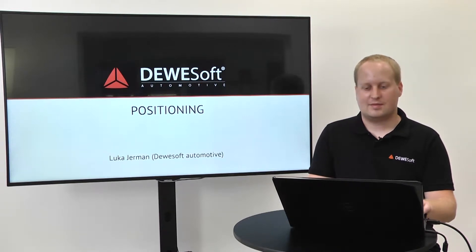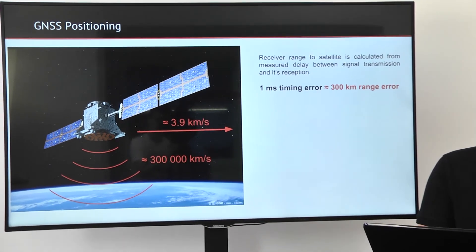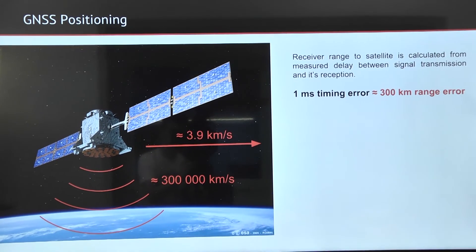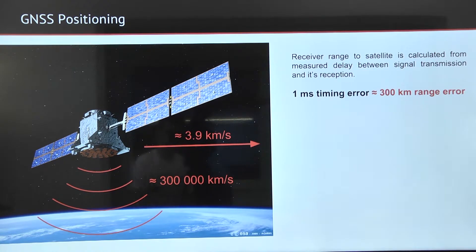GNSS positioning. The range between the receiver and the satellite is measured with a delay between the signal transmission and its reception.